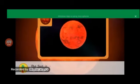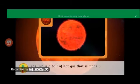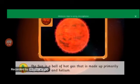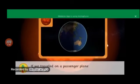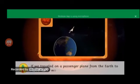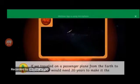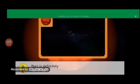The Sun is a ball of hot gas that is made primarily of hydrogen and helium. If we traveled on a passenger plane from the Earth to the Sun, we would need 20 years to make it there. That is definitely a long trip.